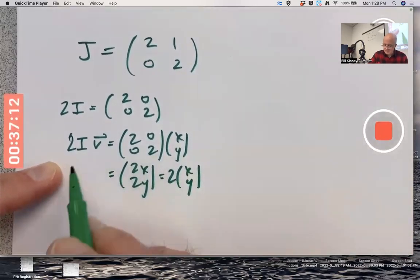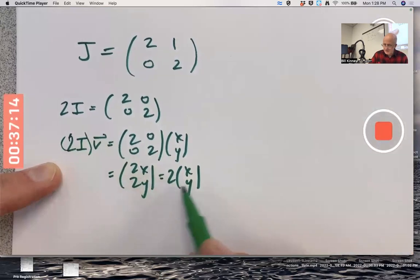V is any vector. You multiply this matrix times that vector, you're going to get two times that vector back. If it's a non-zero vector, it's going to be an eigenvector for the eigenvalue two.